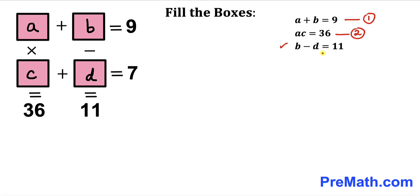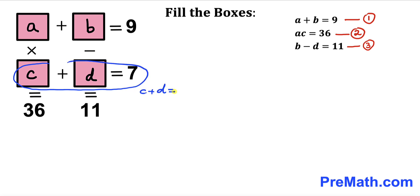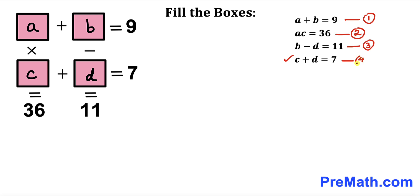Now let's focus on these two vertical boxes: b minus d equals 11. I'll call this equation number 3. Finally, let's focus on these horizontal boxes: c plus d equals 7. I'll call this equation number 4. Now we have a system of 4 equations with 4 variables and we are going to solve for a, b, c, and d.